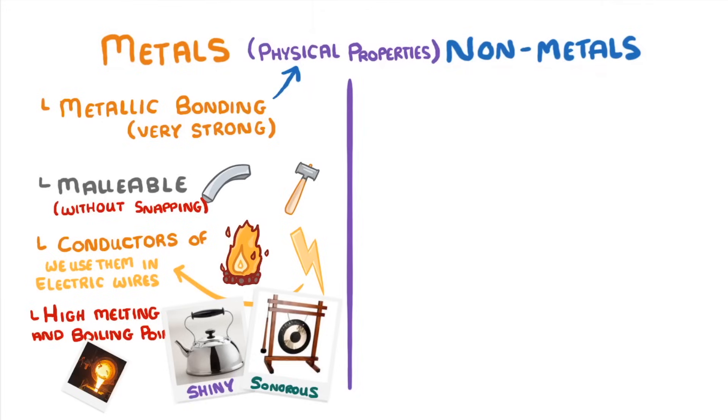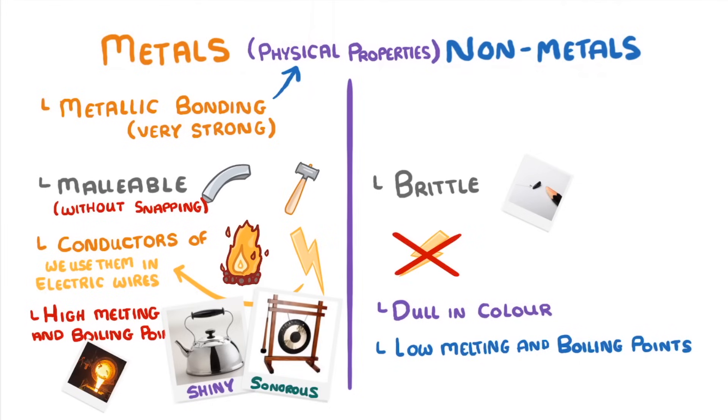Nonmetals, on the other hand, tend to be dull in colour, brittle, which means they easily break, like the carbon in your pencil, and generally have low melting and boiling points, with many of them being gaseous at room temperature. They're also poor conductors of electricity, and generally have lower densities than the metals, which means they weigh less for a given volume.